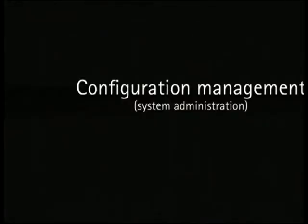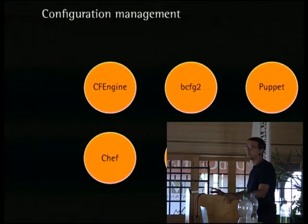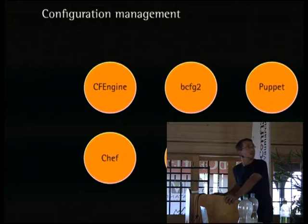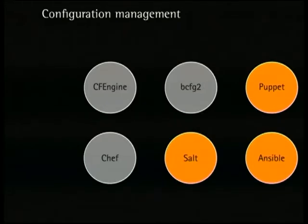I'm going to be talking about configuration management. Because 'configuration management' was also a name used for version control, I specifically want to say this is about system administration. Configuration management, as most of you will understand it, has to do with one of these tools — you'll have probably seen or possibly used some of them. They are listed in somewhat order of increasing or decreasing age. CFEngine predates pretty much all, and one of the latest newcomers has been Ansible and Salt. I'm actually going to talk only about Puppet, Salt, and Ansible — and actually not even about those directly, but what I'm about to tell you works with those three products.